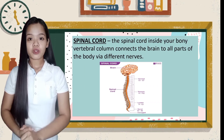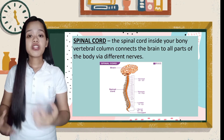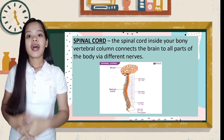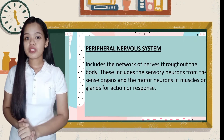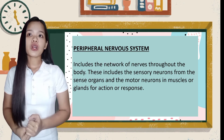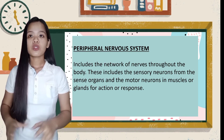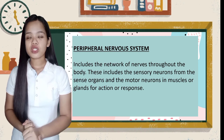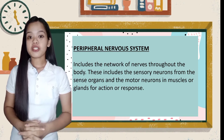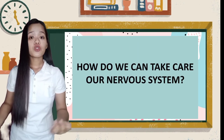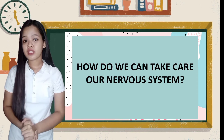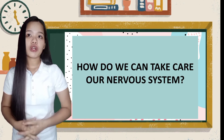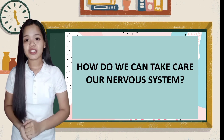The spinal cord is inside your vertebral column and connects the brain to all parts of the body via different nerves. The peripheral nervous system includes the network of nerves throughout the body, including sensory neurons from the sense organs and motor neurons in muscles or glands for action or response. Remember the ways to take care of our nervous system so that we can have a healthy body.